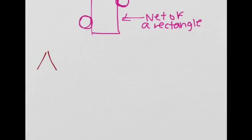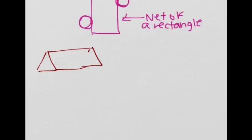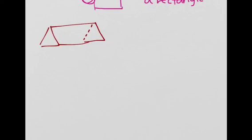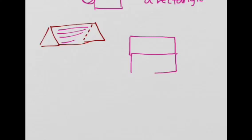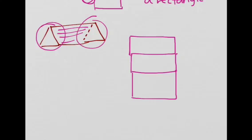Now let's look at the net for a triangular prism. So here is a triangular prism. When we unravel the lateral area, we would get three parts. And we'd also have two triangular faces, one on the top and one on the bottom. So we could draw the triangular faces right here.